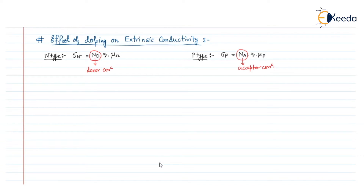The donor and acceptor concentrations are nothing but the doping concentrations. So we can say that doping increases the conductivity of the extrinsic material, because sigma n is proportional to N_d and sigma p is proportional to N_a.